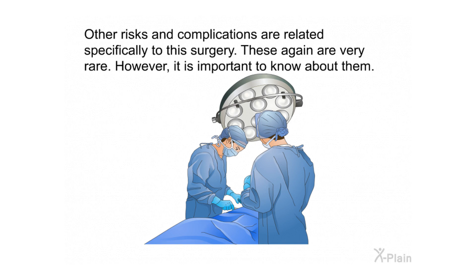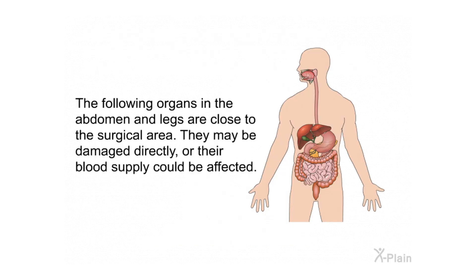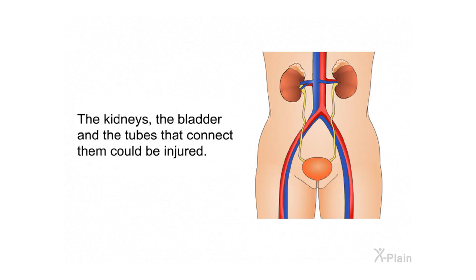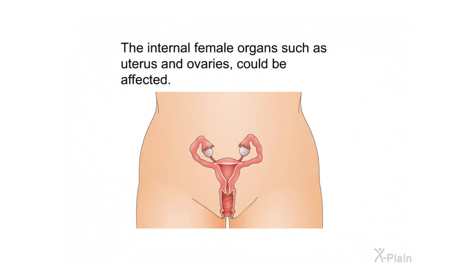Other risks and complications are related specifically to this surgery; these are very rare, but important to know about. Organs in the abdomen and legs close to the surgical area may be damaged directly or have their blood supply affected. These include abdominal organs such as the liver, stomach, and intestines including the small intestine and colon; the kidneys, bladder, and connecting tubes; and the internal female organs such as the uterus and ovaries.